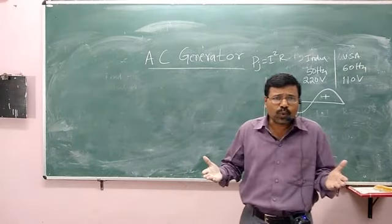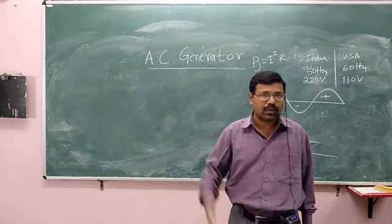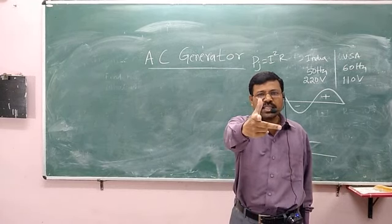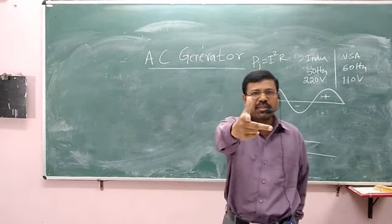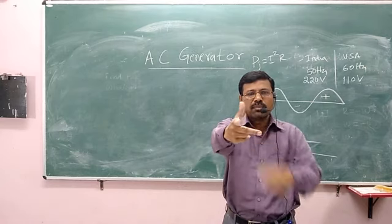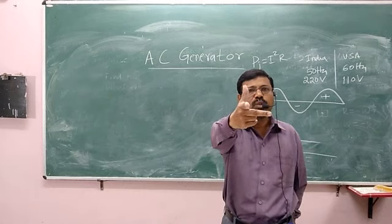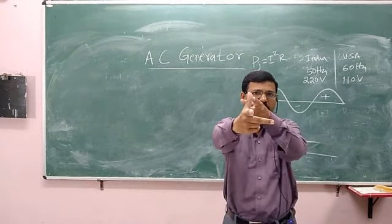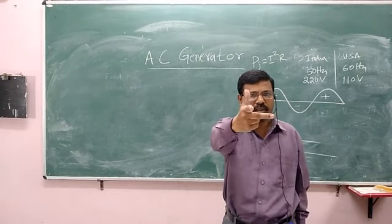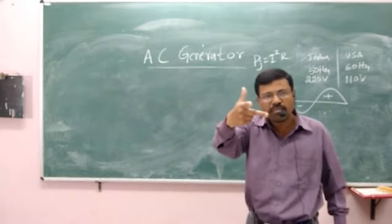What is the rule involved in the generation of electricity by AC generator? It works on Fleming's right-hand rule. Fleming's right-hand rule states: stretch the first three fingers of the right hand mutually perpendicular to each other. The thumb finger shows the motion of the conductor or the coil. The forefinger shows the direction of the magnetic field. The central finger shows the direction of induced current.